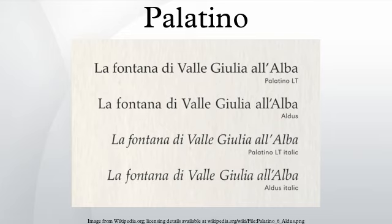Zapf also designed Aldous, which appeared in the D. Stempel AG catalog in 1954. Both Aldous and Palatino were Zapf's new forms of old-style typefaces inspired by the Renaissance. Originally intended as the book or text weight for Zapf's Palatino-Fond family, it was instead released as a separate family. Zapf Renaissance Antiqua was a newer interpretation by Zapf of the same general design, distributed by Scangraphic, who also distributed alternate digitizations of Palatino called Parliament and Praxis.